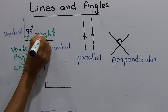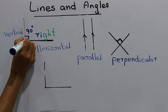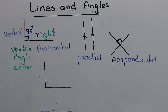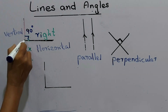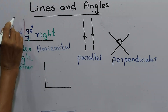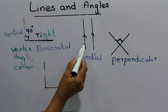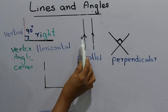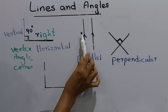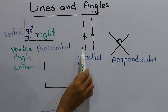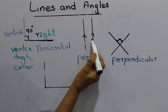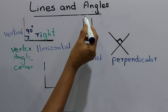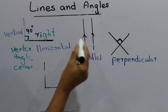Now we have a horizontal line and a vertical line. Here there are another two lines. These two lines are parallel to each other. Parallel means the lines are the same distance apart at every point.